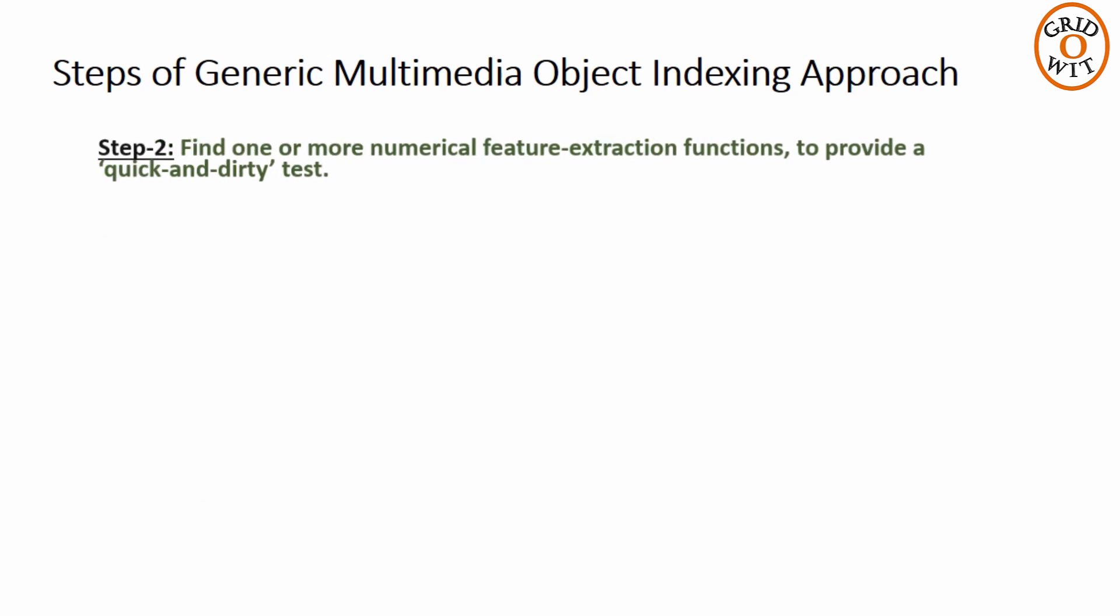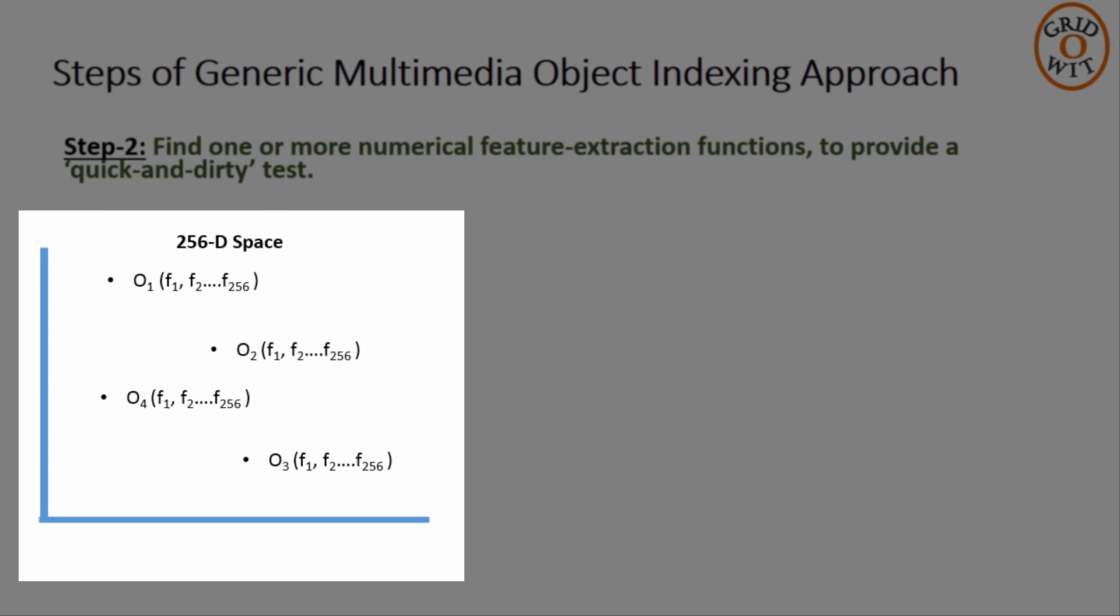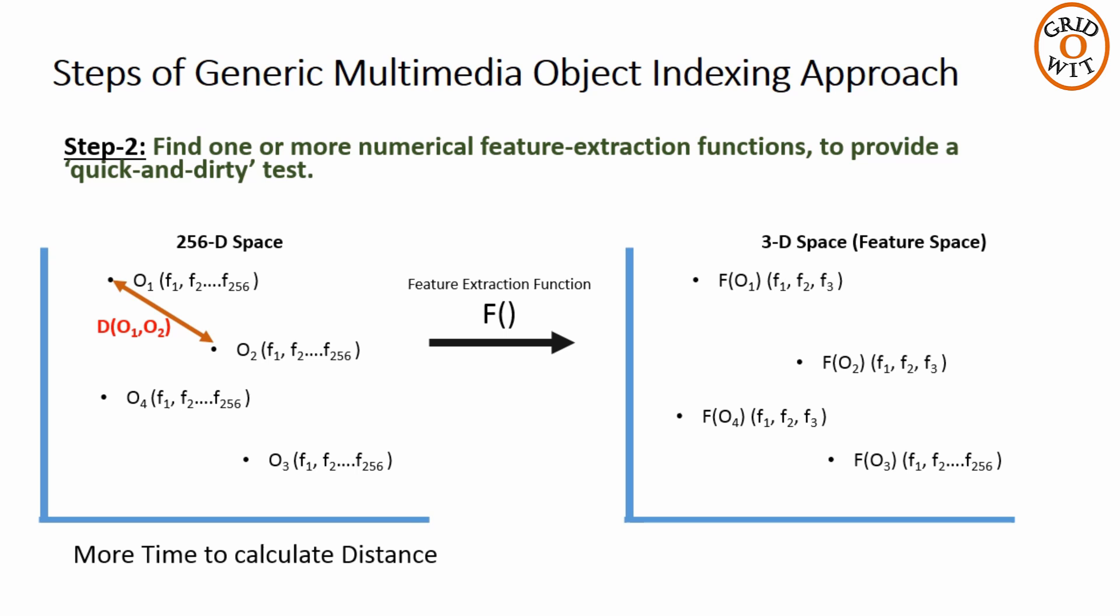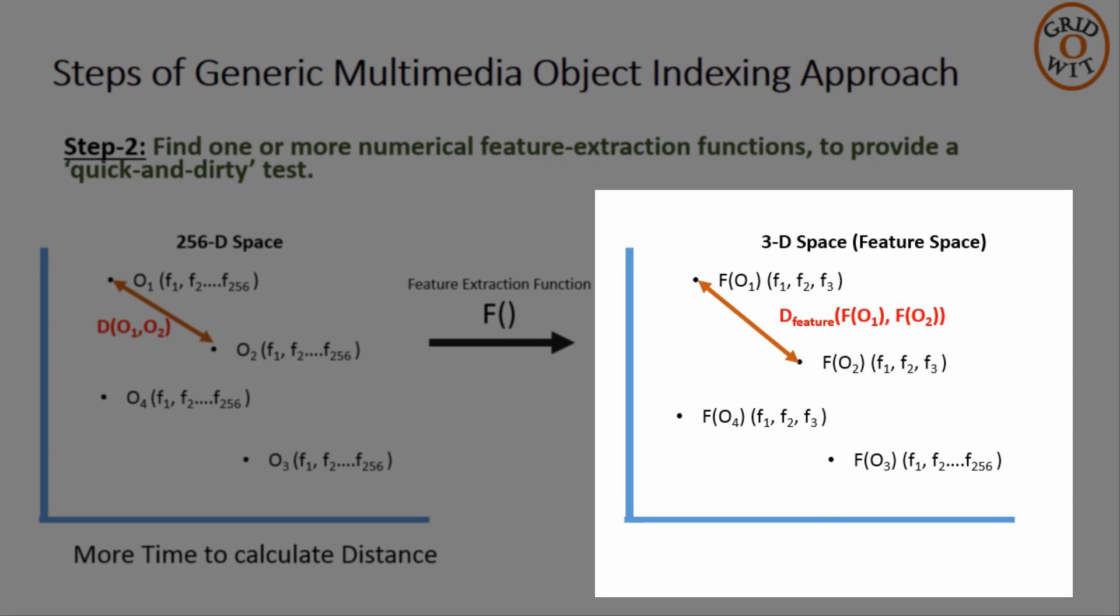Next step of Gemini approach is to find one or more numerical feature extraction functions. For example, if an object has a large number of features, let's say 256 features, it will take more time to calculate the distance function between two objects. So we need some feature extraction function to reduce the number of features, for example, to only three features. Obviously, calculation of distance with only three features will take less time than with 256 features of each object.